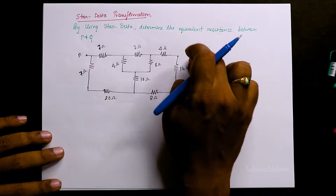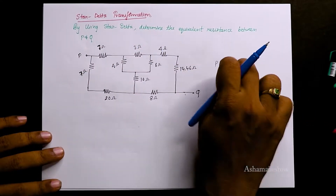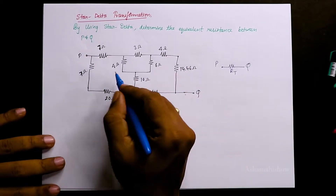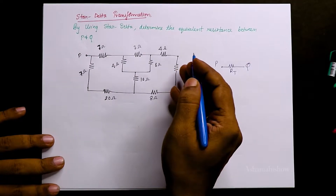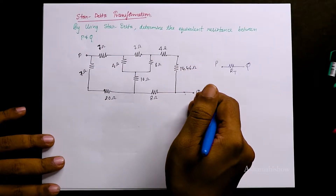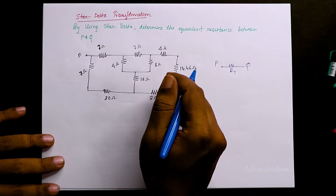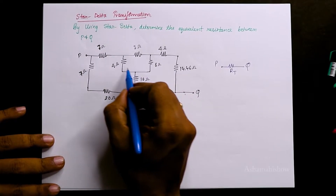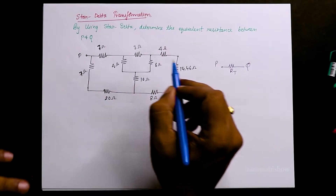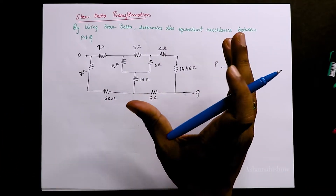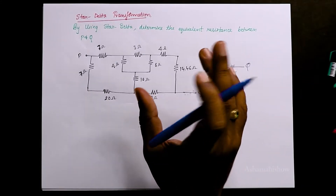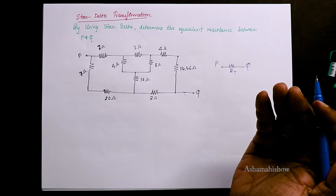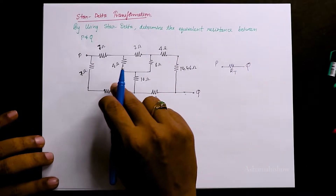We need to reduce all these resistance elements into one. For that we have series and parallel already, but look at this — if you have a complex network like this, the construction cannot be solved easily by series and parallel. In fact, you need to use star-delta transformation to reduce the network first, and then use series and parallel.